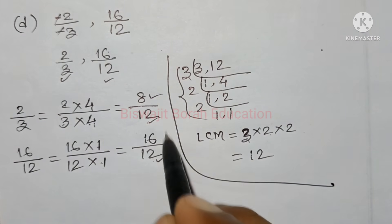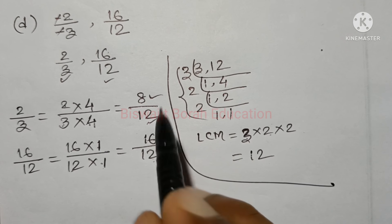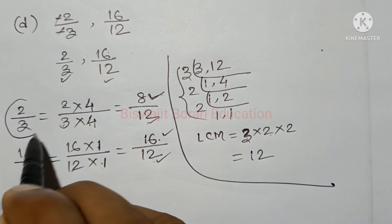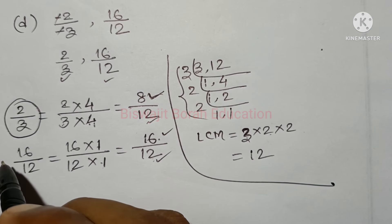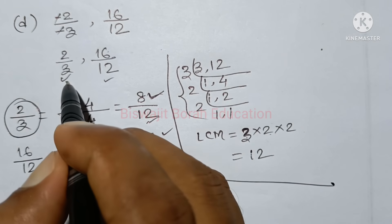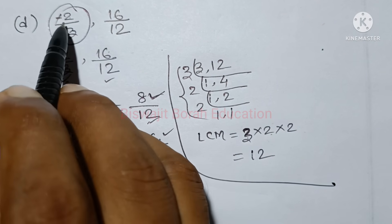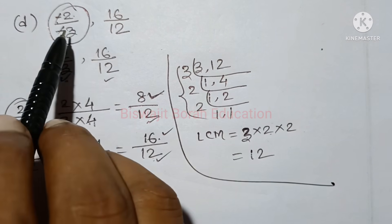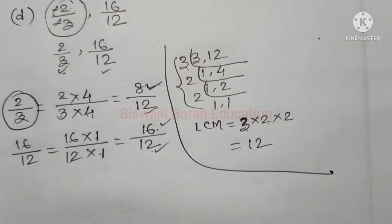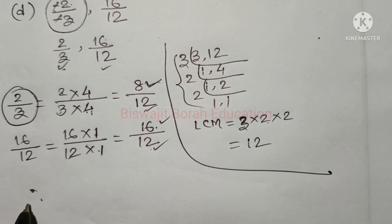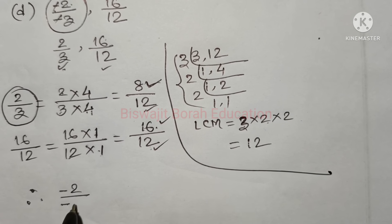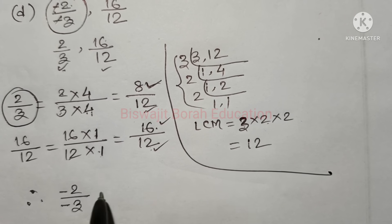So, 8 will be 8. The questions are answered 8. Let me tell you that here you see the number of 2 by 3 is less than 16 by 12.